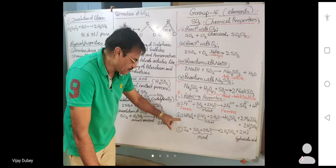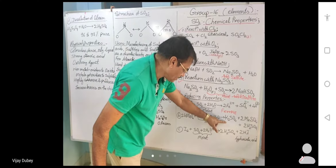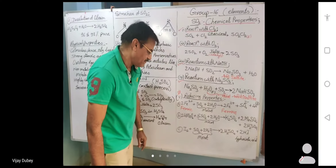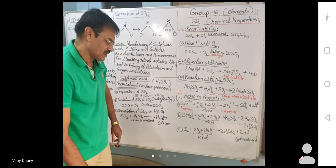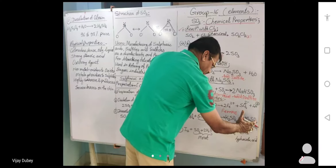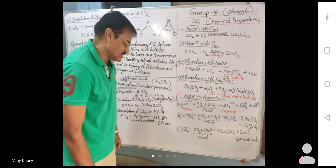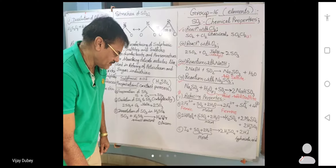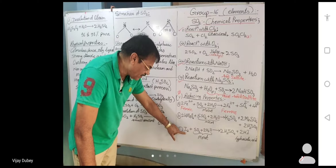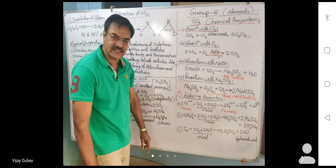Potassium permanganate on reduction with moist sulfur dioxide forms potassium sulfate, manganese sulfate, and sulfuric acid. Sulfur dioxide also reduces iodine into hydroiodic acid (HI).